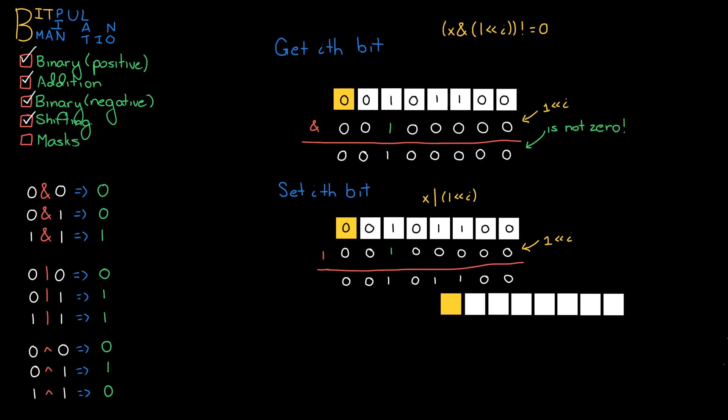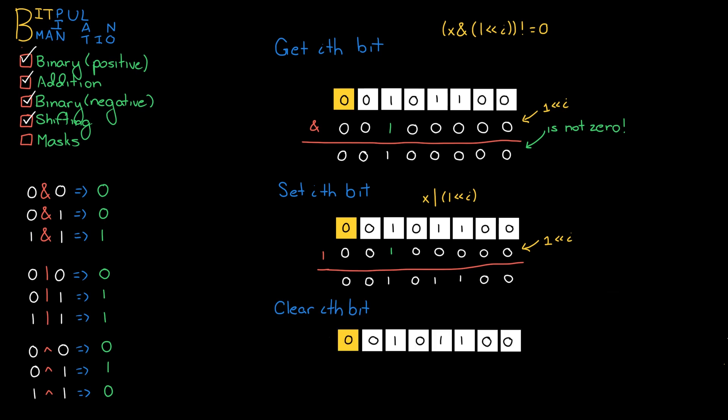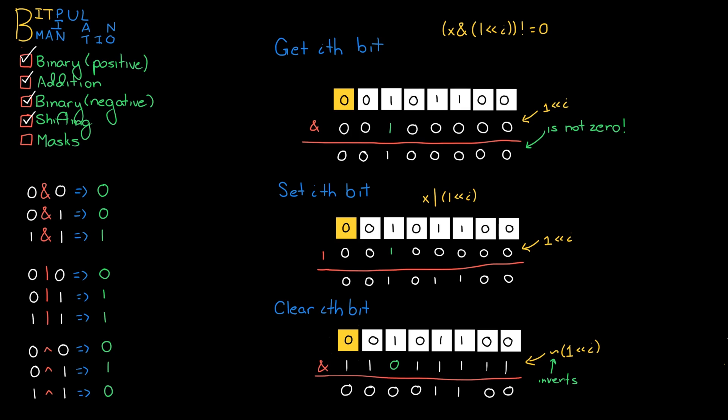Now, what about clearing the i-th bit? That's a little bit tricky, but still very doable. What we want to do is AND it with a mask that has a 1 everywhere else but that one spot. To create such a mask, all we have to do is take our mask from before and invert it. And that's exactly what we see here.